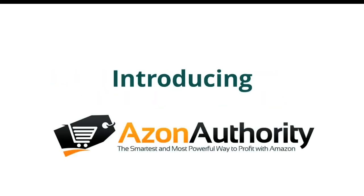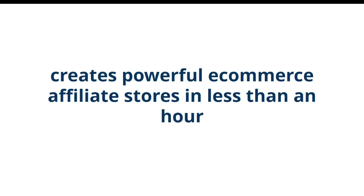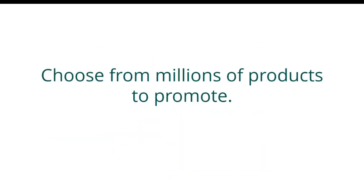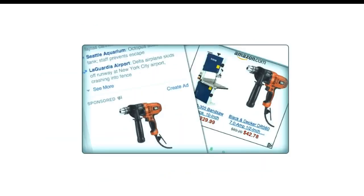Introducing Azon Authority. This WordPress plugin creates powerful e-commerce affiliate stores in less than an hour with Amazon as your personal dropshipper. It's based on a proven strategy that Sean, the creator, uses in his own successful affiliate stores. You can choose from millions of products to promote, plus you can earn 90 days of profits from every single store visitor.